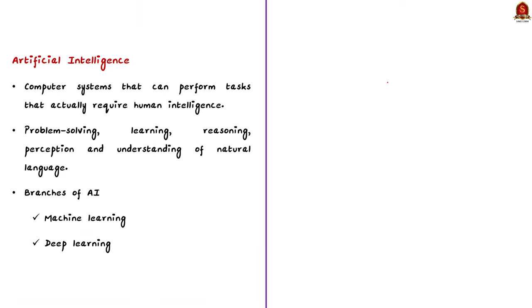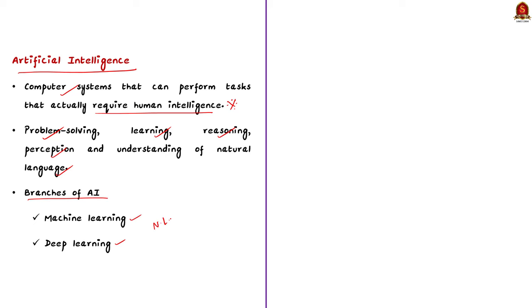Firstly, Artificial Intelligence refers to the development of computer systems that can perform tasks that actually require human intelligence. AI can perform tasks like problem solving, learning, reasoning, perception, and understanding of natural language. Note that AI has various branches like machine learning, deep learning, natural language processing, robotics, etc.